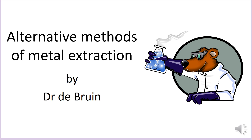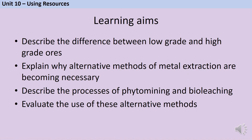This is a video about two alternative methods used for metal extraction. In Unit 4, the Chemical Changes Unit, you learned about electrolysis and also reduction with carbon. Now we're going to look at some slightly less common methods that can be used alongside these or instead of these. We're going to define the word ore, describe the difference between low grade and high grade ores, explain why alternative methods of metal extraction are becoming necessary as we use more low grade ore, and describe and evaluate phytomining and bioleaching.